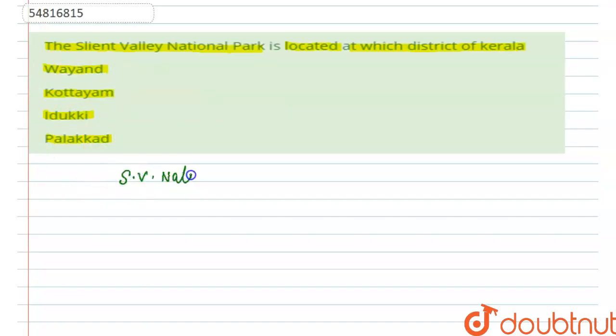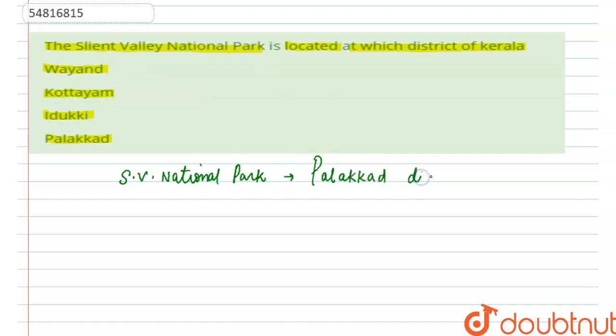The options we have are: Wayanad, Kottayam, Idukki, and Palakkad. The answer is Palakkad district, located in the north-east corner of Kerala.